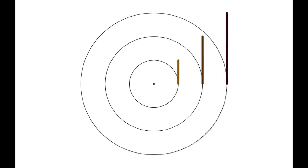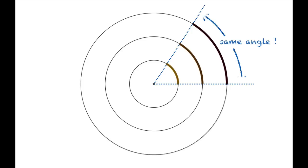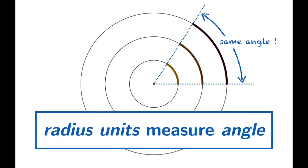you will notice that you get these shapes that look to be pretty much similar, and the thing you really notice here is that all three contestants have marked off the same angle. That's really the key observation: radius units measure angle.